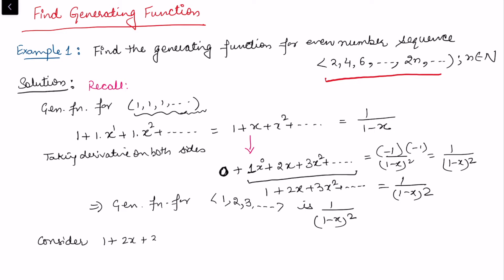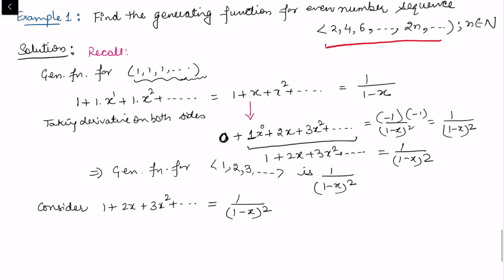We know the generating function for 1 + 2x + 3x² + ... is 1/(1 - x)². So we simply multiply both sides by 2.